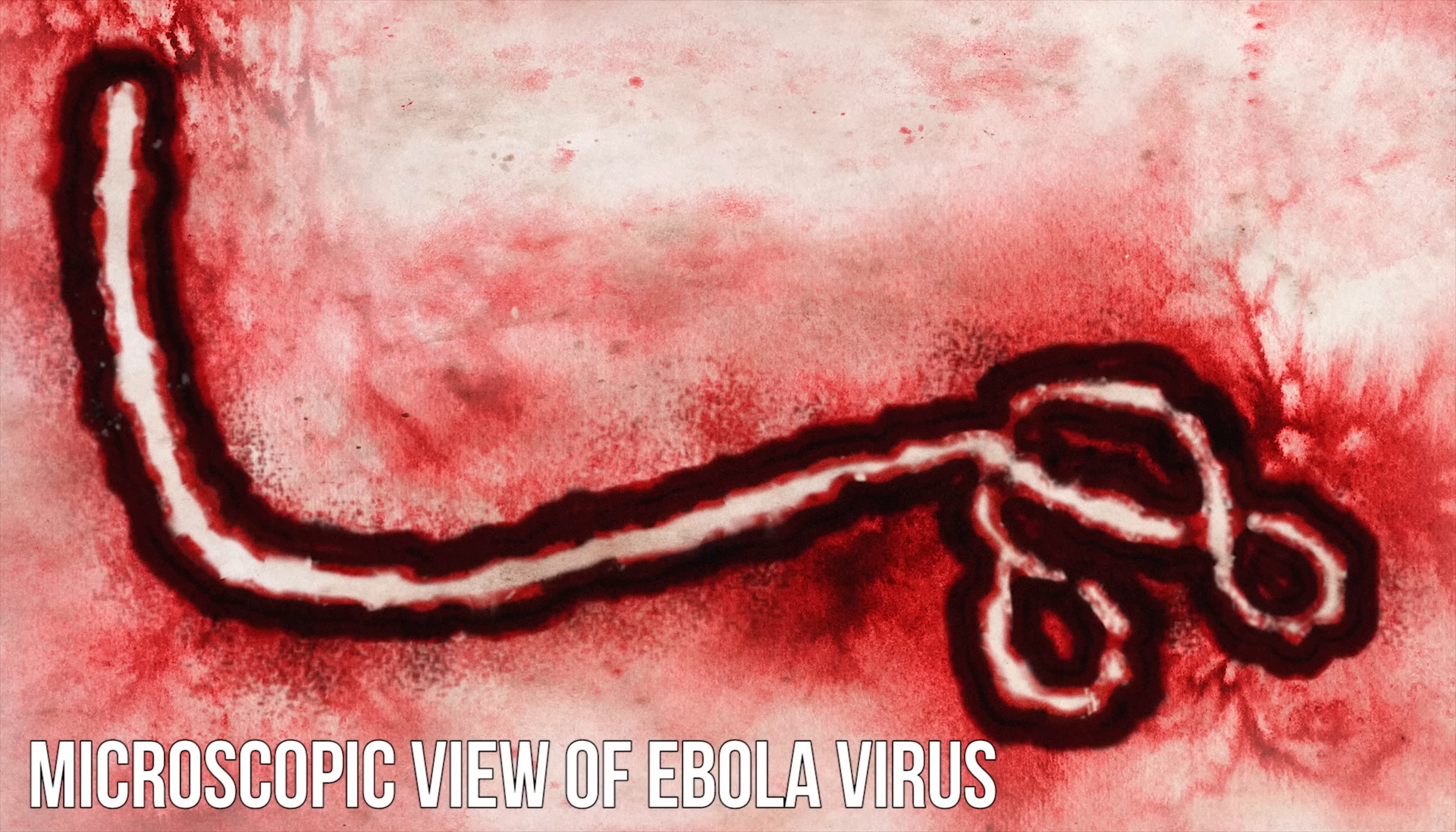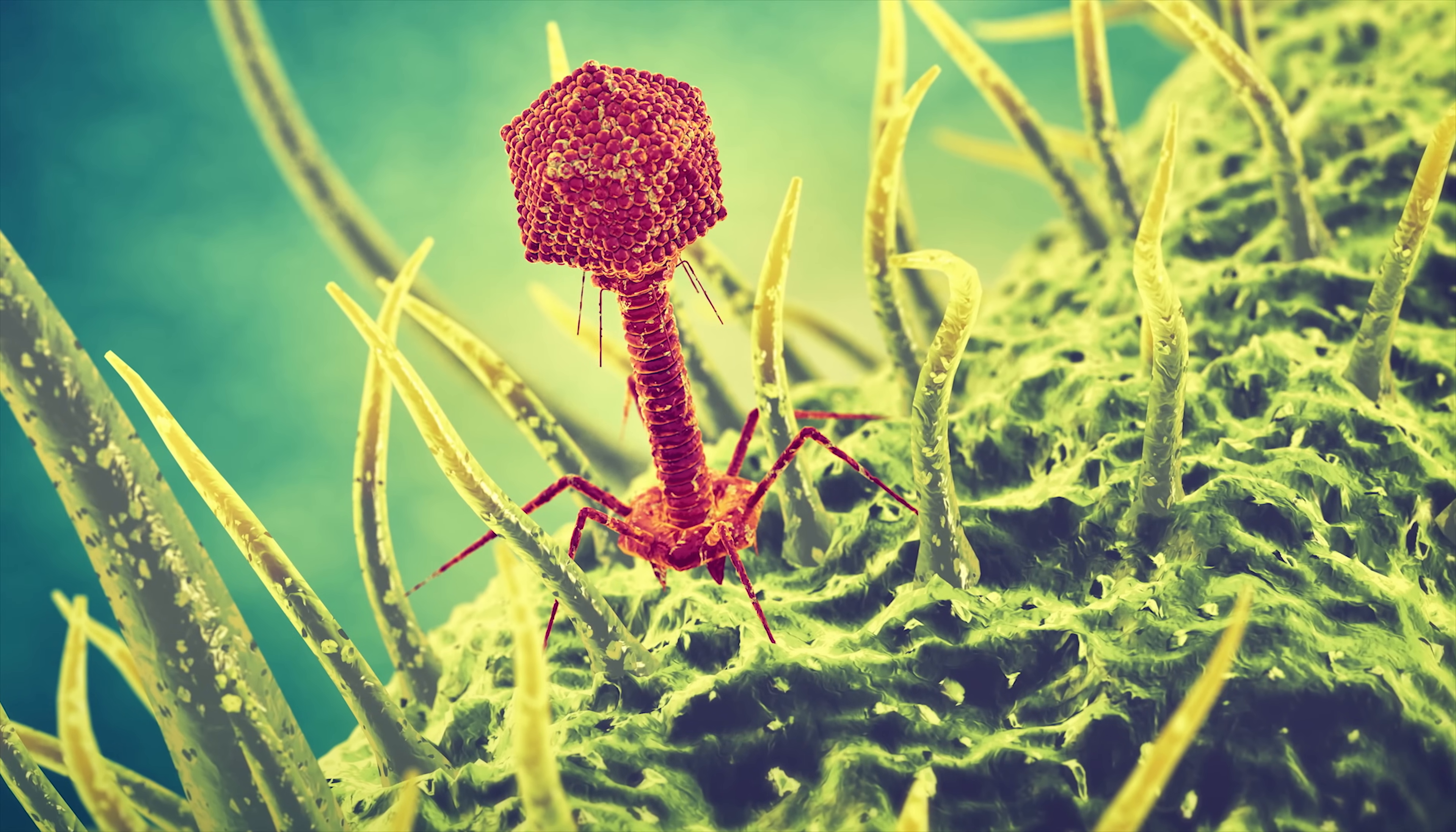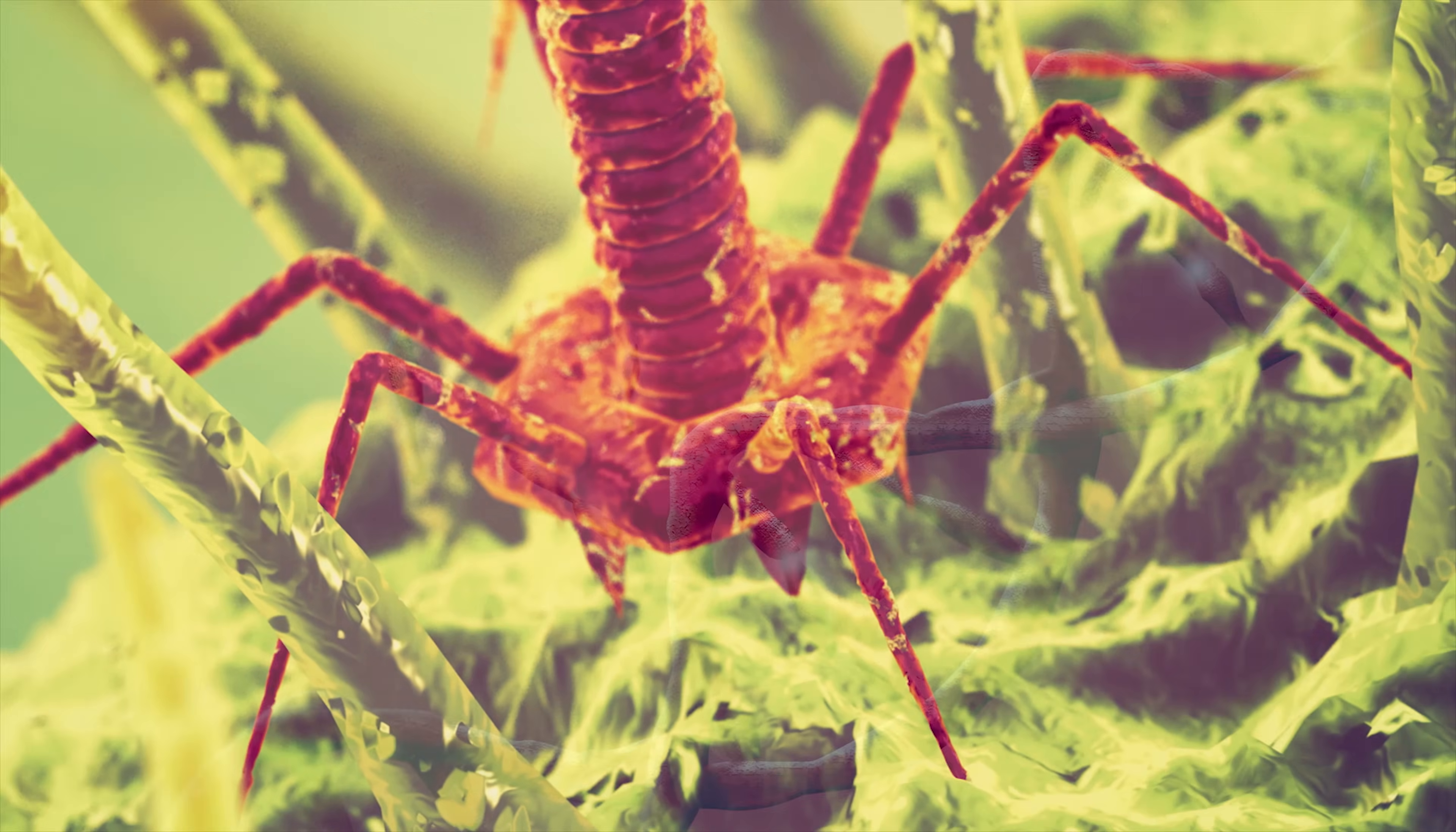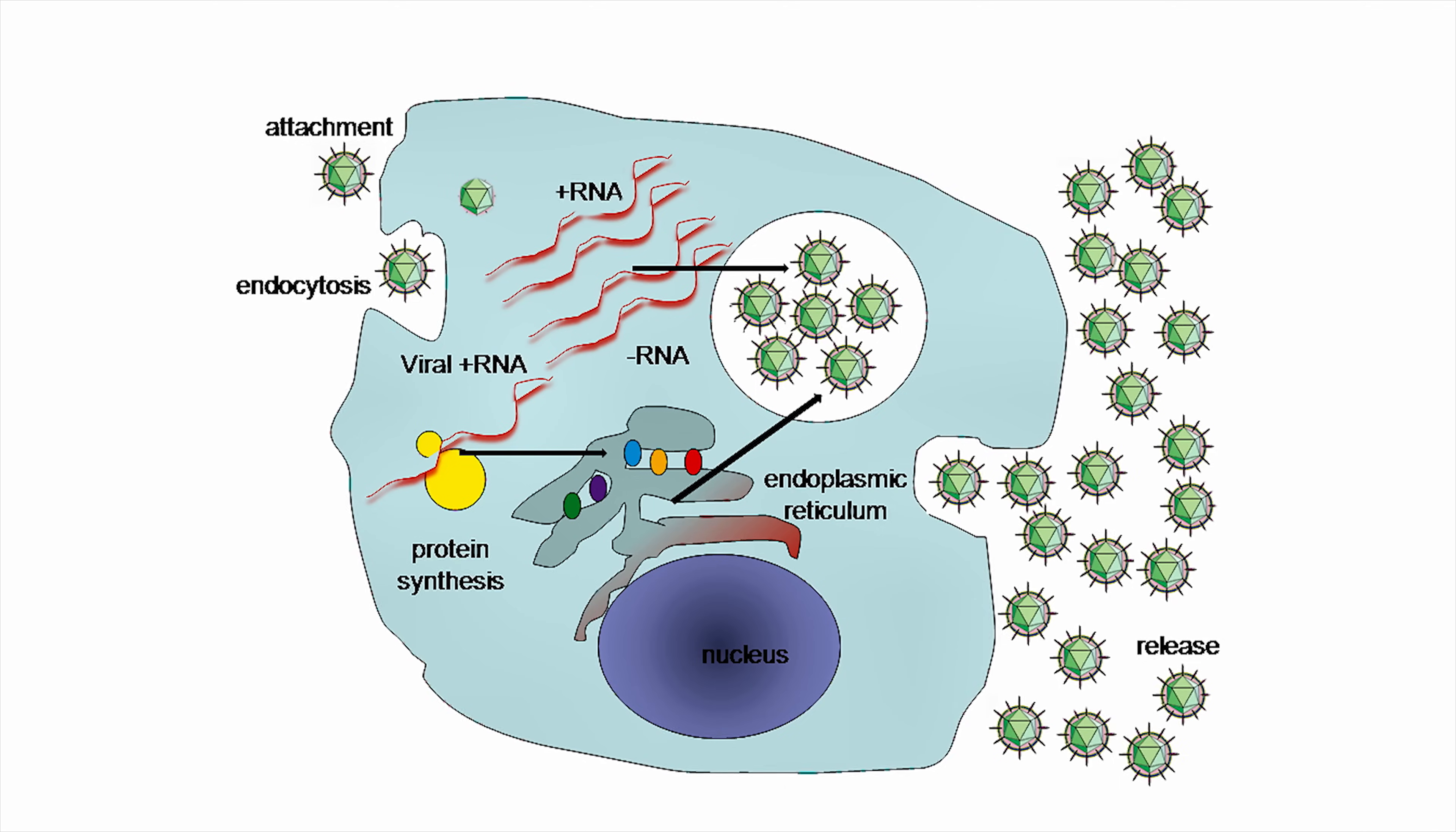To understand what a virus is, we'll start with a look at the original, biological meaning of the word. Biological viruses, like the ones that can make you sick, are parasitic. They inject their own code, in this case, either DNA or RNA, into a host cell as a means of replication.